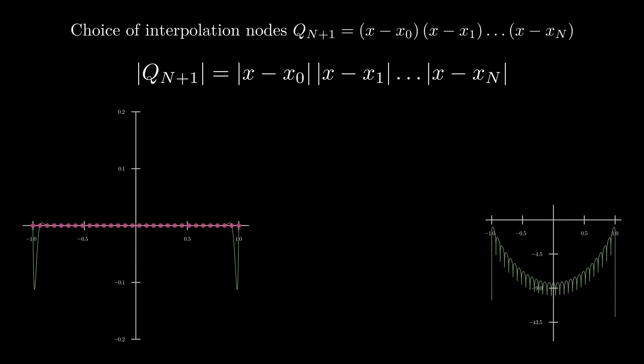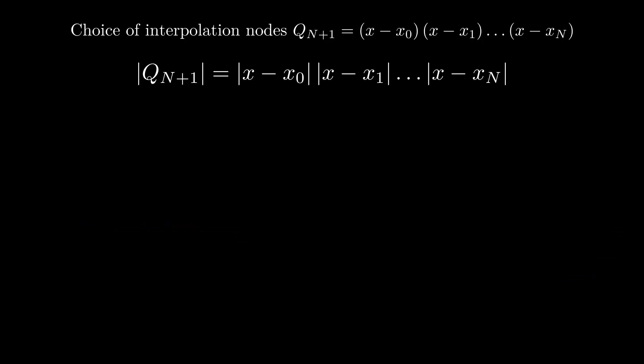Is there a better general purpose configuration for the nodes? It can be shown that an ideal asymptotic density of nodes is n over pi times the square root of 1 minus x squared. Nodes taken from the roots of the amazing Chebyshev polynomials happen to fit the bill. The Chebyshev polynomials are beautiful and worthy of study in general. Unfortunately, we can only introduce them.